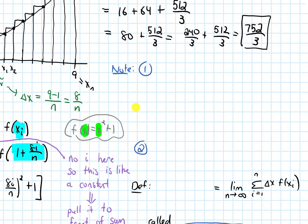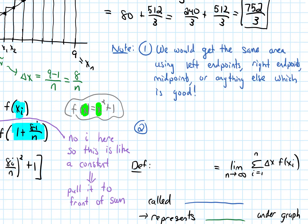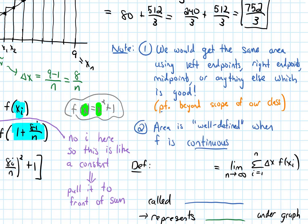I want to end with a couple of notes and a definition. The first note is that we would get the same area using left endpoints, right endpoints, midpoints, or even arbitrary sample points — which is good, we want the same area regardless of which choice we pick. The proof of that would be beyond the scope of our class and covered in a more advanced course. The second note is that the area will be well defined — meaning any choice of sample points gives the same result — in the case where f is continuous.